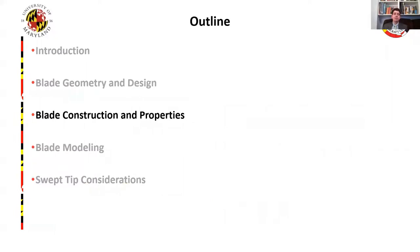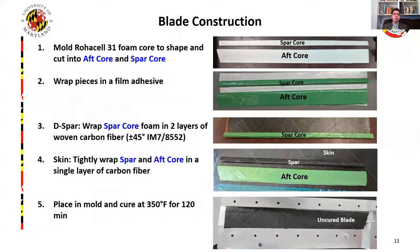With the blade design finalized, we move to building the blade and performing benchtop tests to measure its properties. The blade starts with the foam core, pressed into shape using the outer mold line of the blade. It is cut into two pieces: the aft and the spar core. The leading edge weights are placed inside the spar core, and then both cores are wrapped in a film adhesive seen here as a green material. The spar core is then wrapped in two layers of the woven carbon fiber prepreg, and the spar and aft core are placed together and wrapped tightly in a single layer carbon fiber skin. The blade as a whole is placed into a two-part mold, and the spar and skin are co-cured together in an oven.